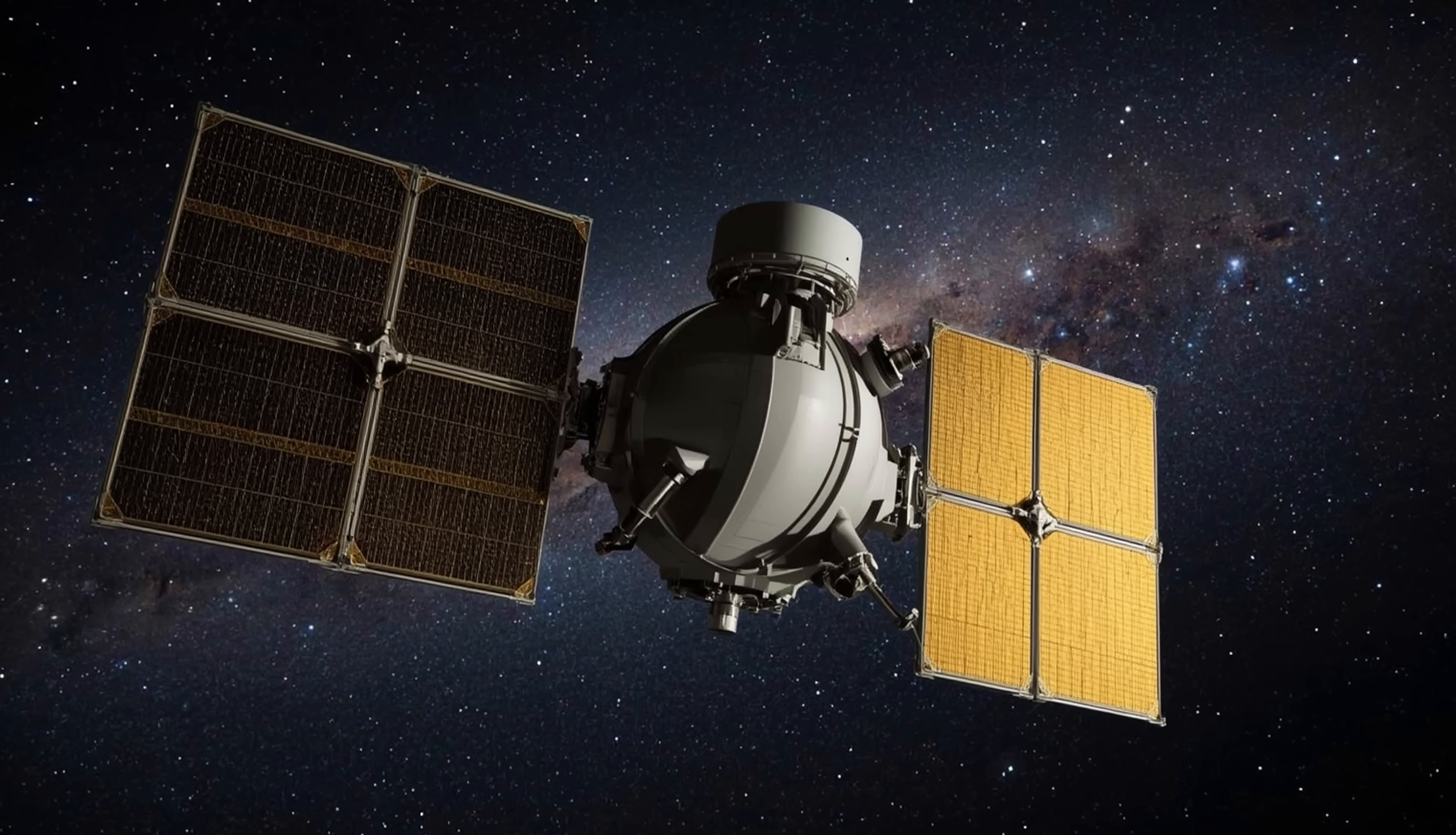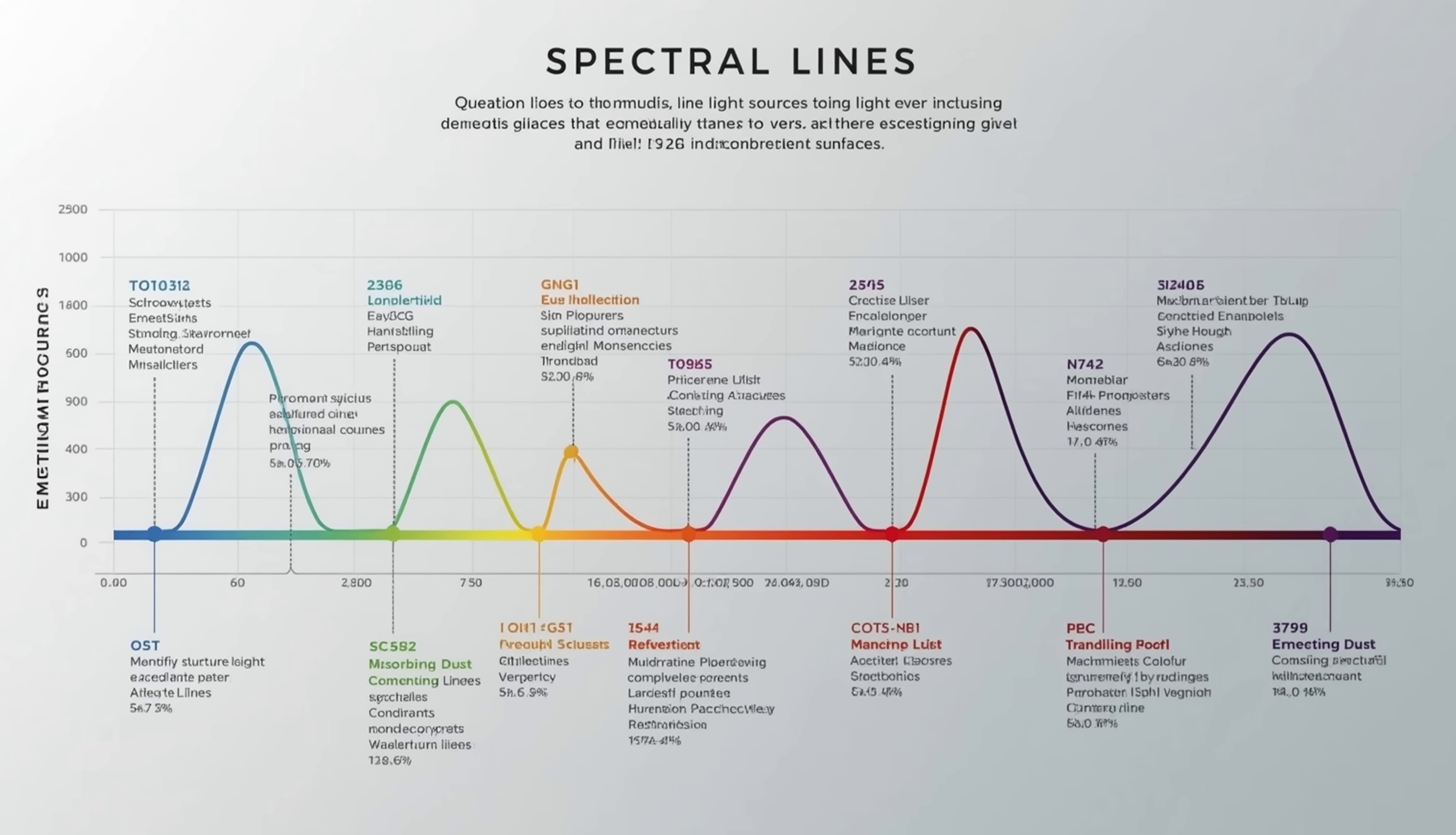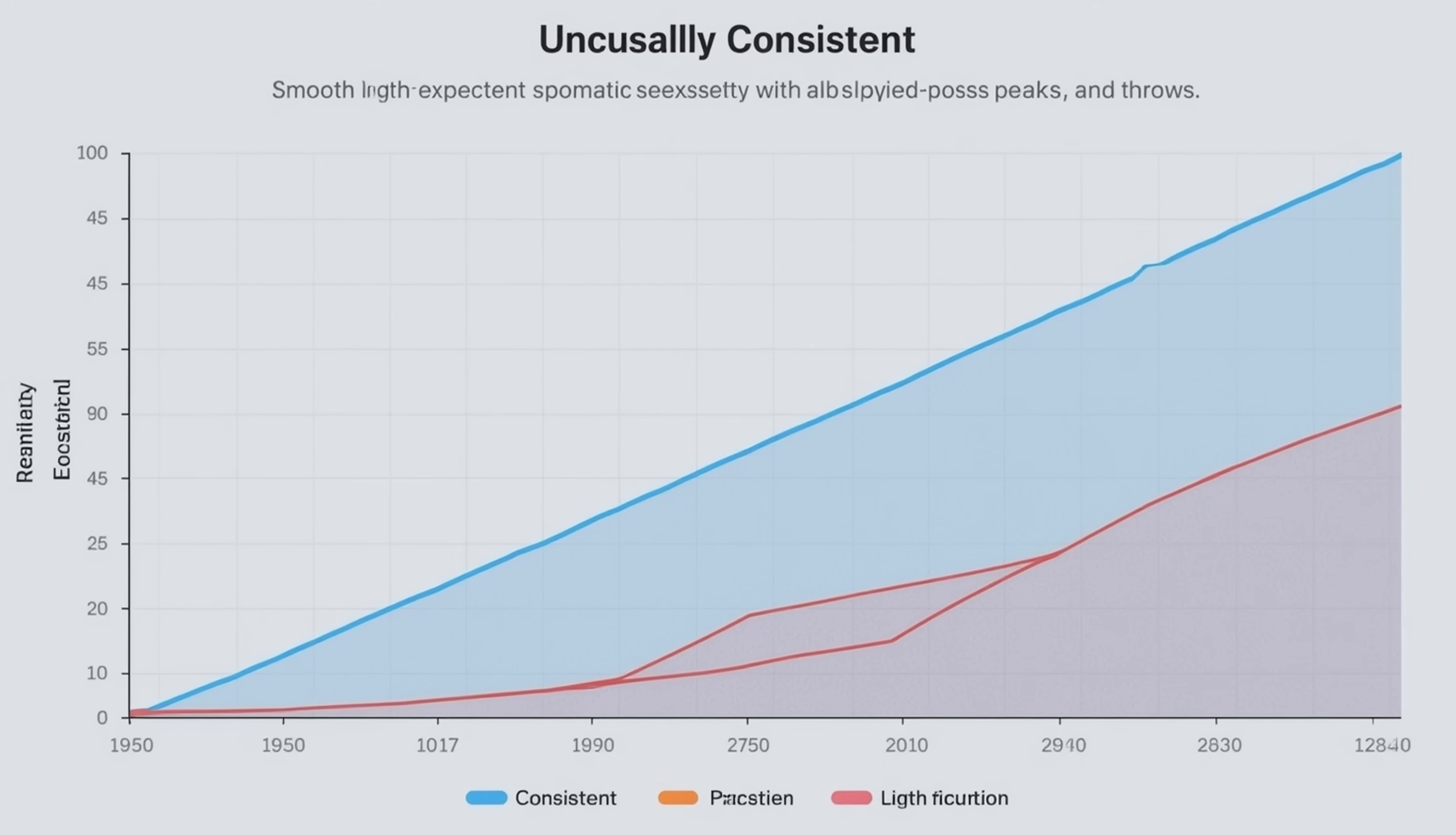That is where the James Webb Space Telescope became important. Ground-based observations only go so far before faint light is lost in atmospheric noise. Webb, by operating in infrared wavelengths from space, can detect far weaker signals and split them into spectral lines. Those lines reveal whether the light comes from gases, dust, or reflective surfaces. In the case of ATLAS, Webb allowed astronomers to check whether the signals matched ordinary cometary outgassing, or if they stayed steady in a way more difficult to explain. The challenge has been that some light features remained unusually consistent instead of sporadic.